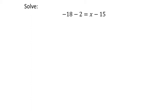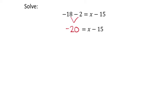On that last problem we had to combine some variable terms — that's fine because they're still like terms. This one, however, we're combining two constants: negative 18 and negative 2. That reads as negative 18 minus 2, which is negative 20. On the right side we've got x minus 15 — those are not like terms we can combine, so I'll leave them alone. You can write it as 1x if you like.